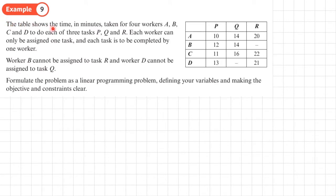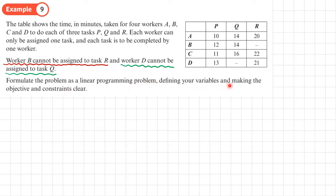Example 9: a table shows the time in minutes for four workers A, B, C, D to do each of three tasks P, Q, and R. Each worker can be assigned to one task and each task is completed by one worker. Important constraints: worker B cannot be assigned to task R, and worker D cannot be assigned to task Q. We must formulate this as a linear programming problem. Notably, this is not balanced — we have more workers than tasks — so we need to add a dummy task.